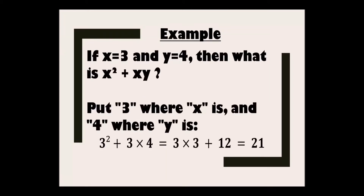One more example: if x equals 3 and y equals 4, then what is x² plus xy? Instead of x we put 3, and instead of y we put 4. So x² means 3², plus xy means 3 into 4. So 3² is 3 into 3, that is 9. And 9 plus 12 is 21.